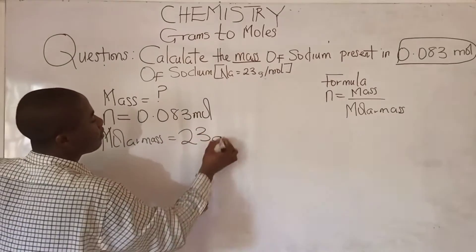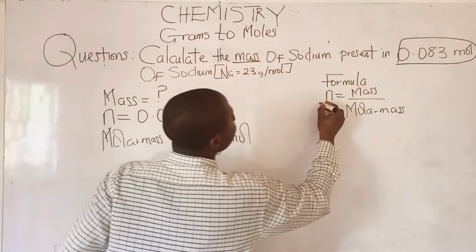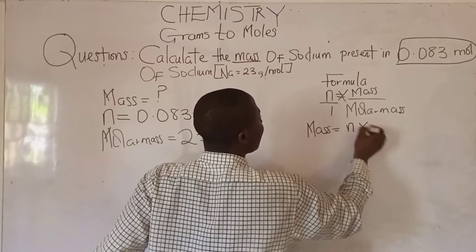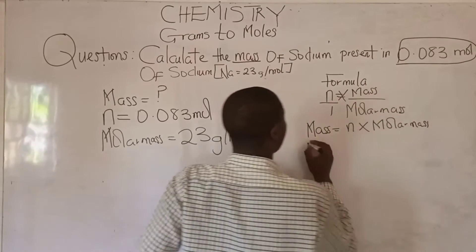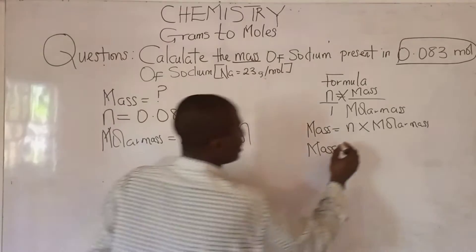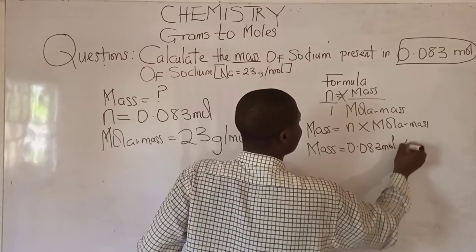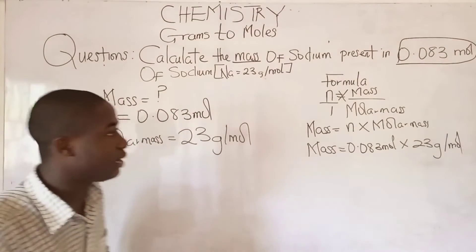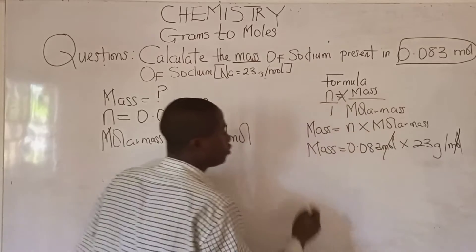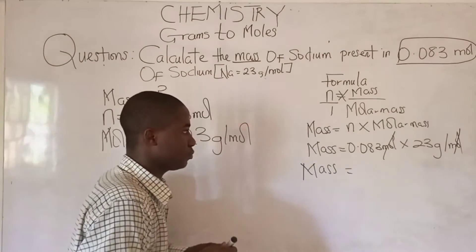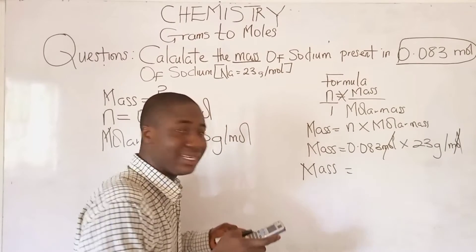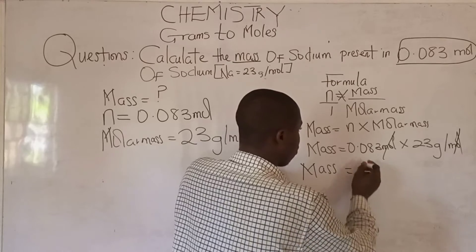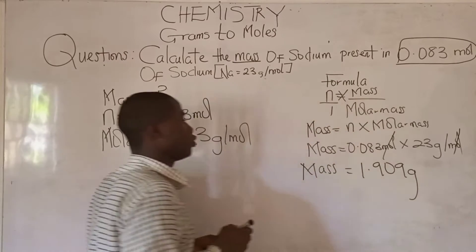The molar mass of the element is given to be 23 grams per mole. Making mass the subject of the formula by cross multiplying, mass equals n times molar mass. So mass equals 0.083 moles times 23 grams per mole. Moles cancels moles, and 0.083 times 23 gives us 1.909 grams.